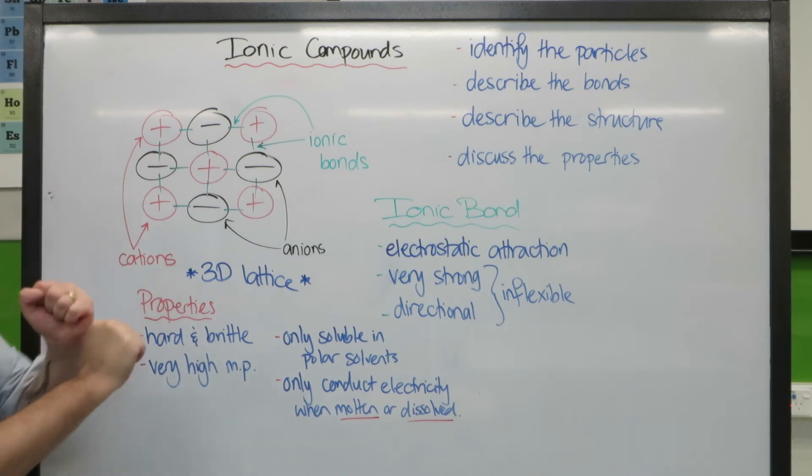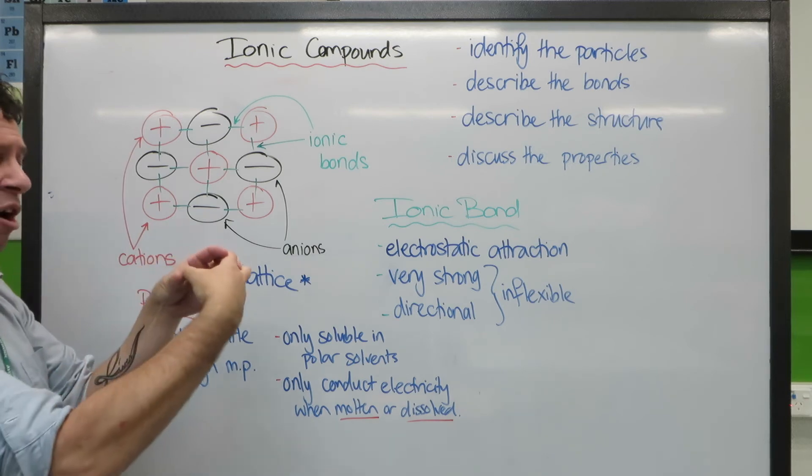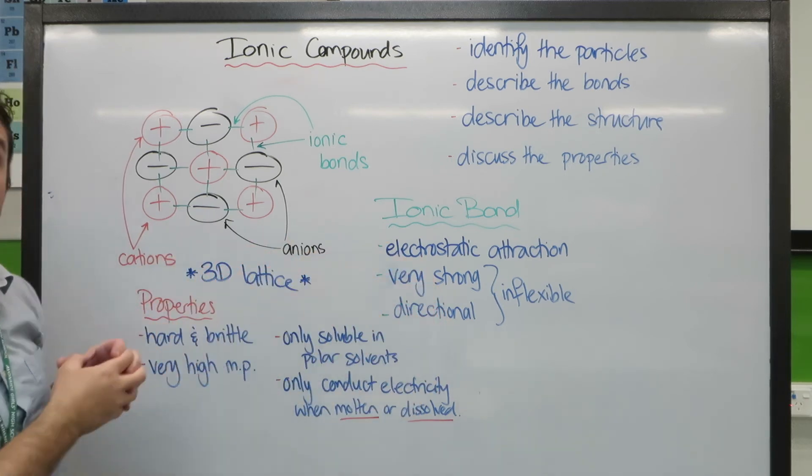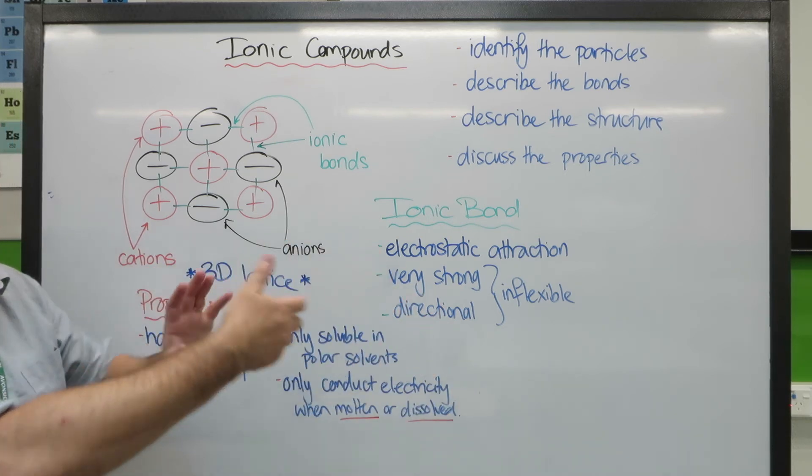The brittle bit means that when I do have enough energy, it will actually break lots of that - I'm going to break them at once. Because the ions need to stay together as a group of ions, it will just break it into two lattices, or three lattices, or whatever.